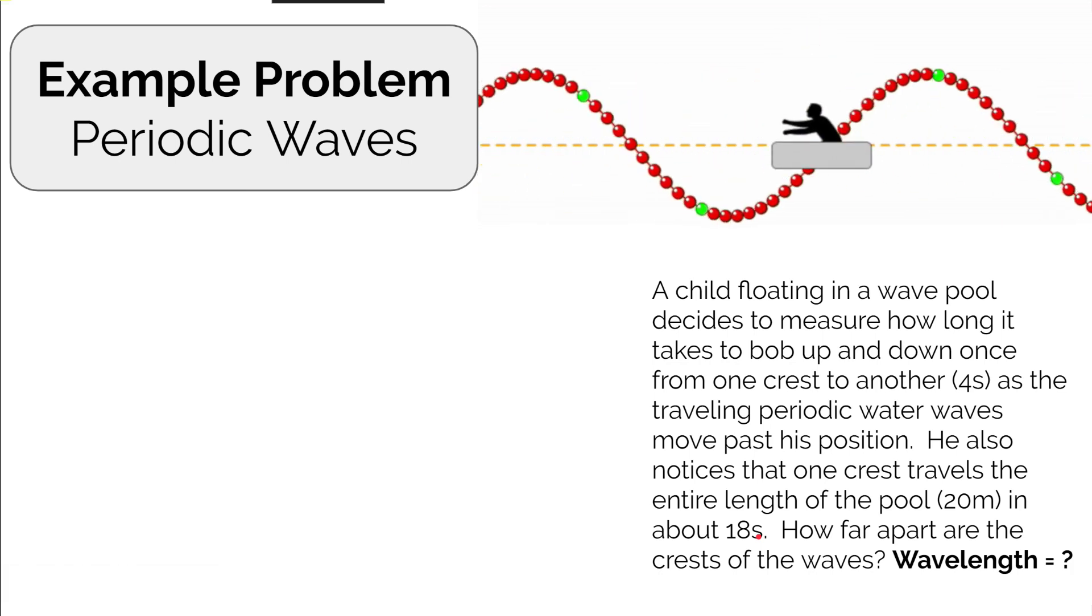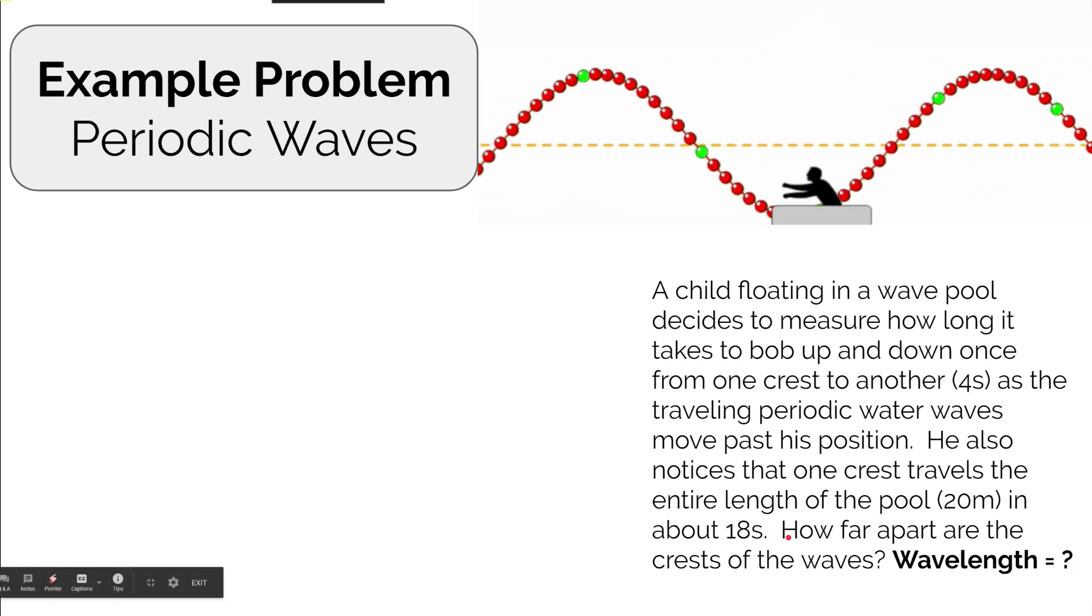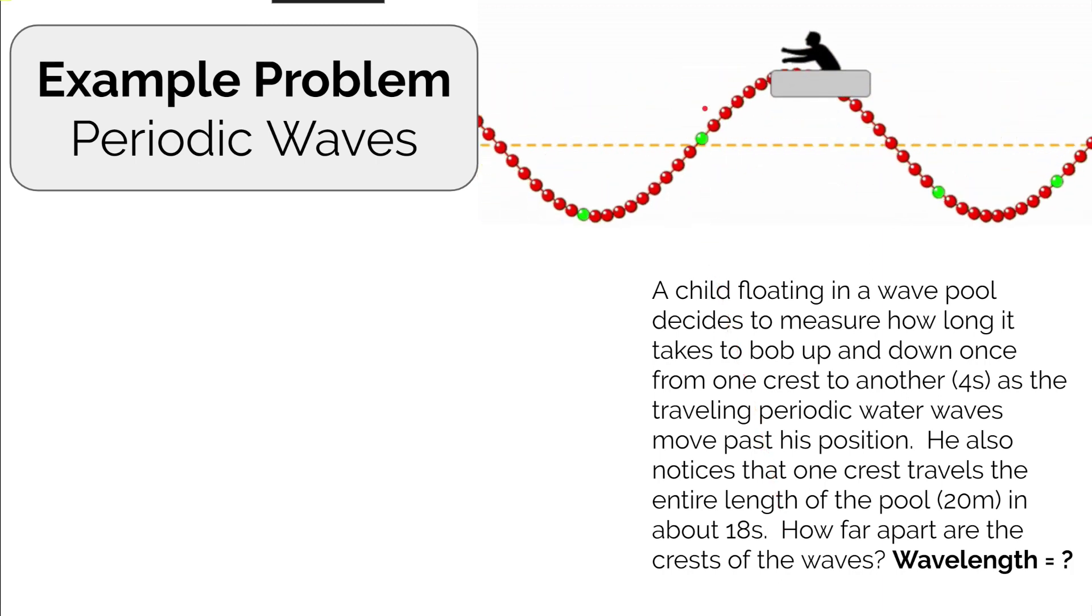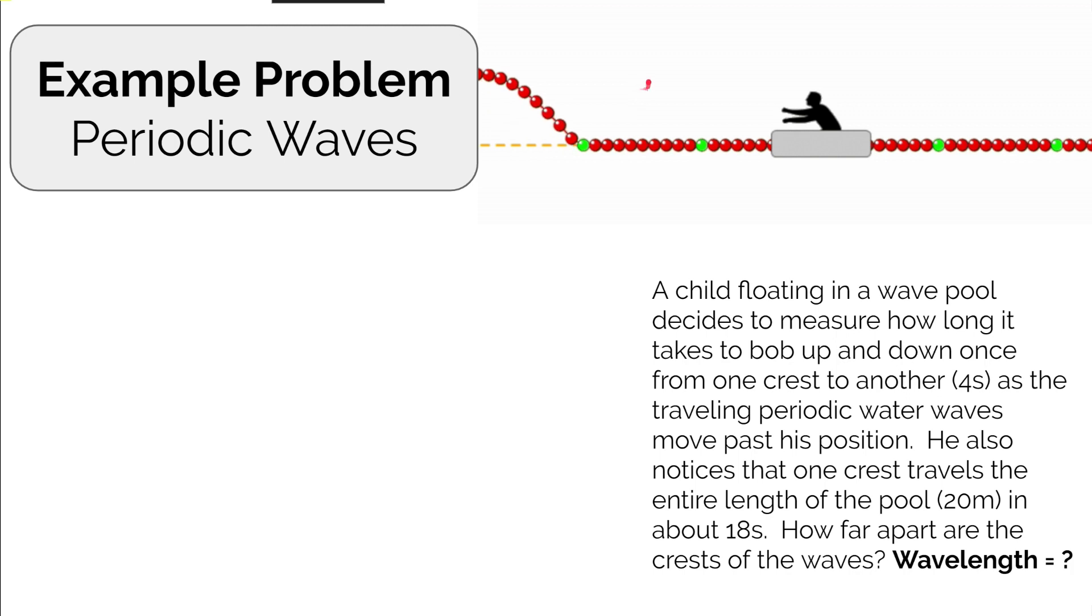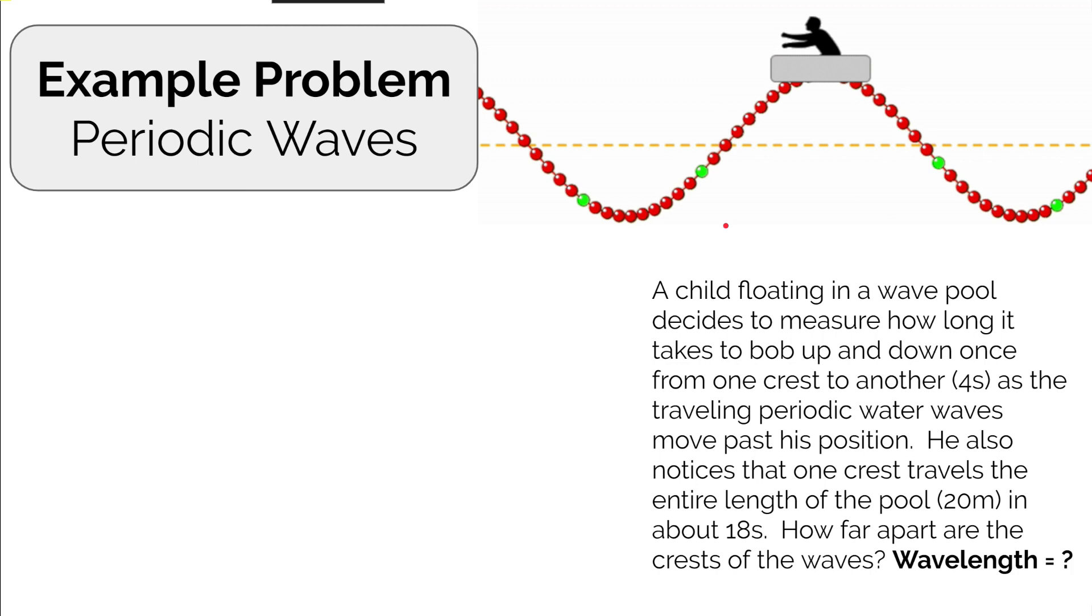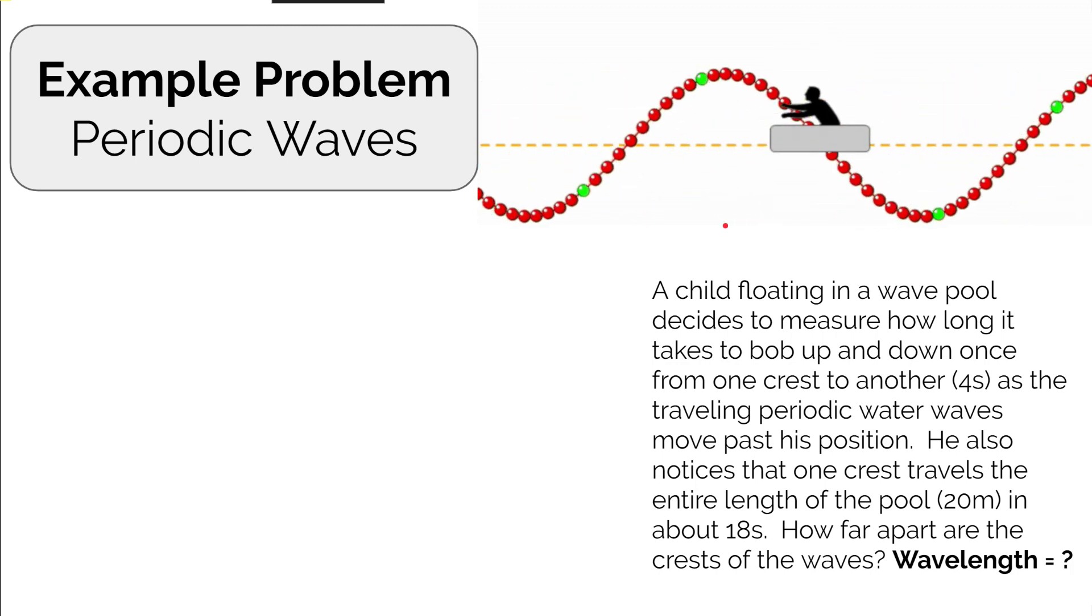The question we're going to answer is: how far apart are the crests of the waves? If we look at our simulation, that's from one crest to another crest. What's the length between those? We're essentially finding the wavelength of the periodic waves.